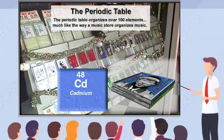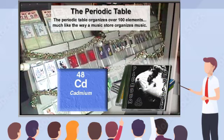You might have to look through the entire store to find the work of one particular artist. However, if the music store organized their inventory by artist, type of music, or in some other fashion, you would spend much less time searching. Similarly, the periodic table organizes elements in a logical fashion.